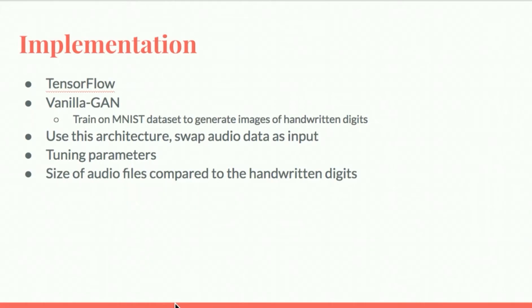We chose an implementation called Vanilla GAN, which is a minimalist GAN that can successfully train on the MNIST dataset to generate images of handwritten digits. The biggest challenge was swapping the input as audio to be able to generate audio samples because of both the time it takes to train and the discrepancies between audio samples and image samples. Audio files are a lot bigger than image files and thus need to be processed and formatted differently.